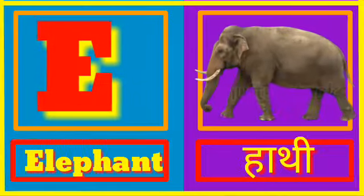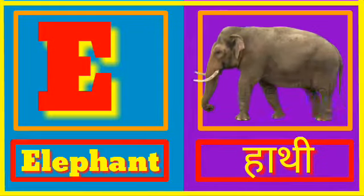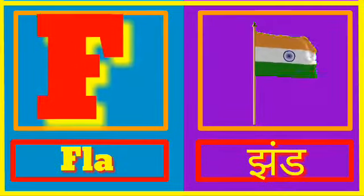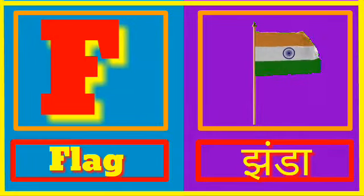E for Elephant. Elephant means Hathi. F for Flag. Flag means Janda.